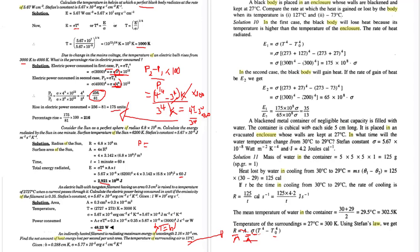This is where Prevost's theory comes in. When you use Prevost's concept with Stefan's constant, the formula gets a slight twist. The temperature of the surrounding air means the body will be absorbing radiation from it, while the body itself is emitting. There is a net effect between absorbing and emission, so you find the net amount of heat energy lost.